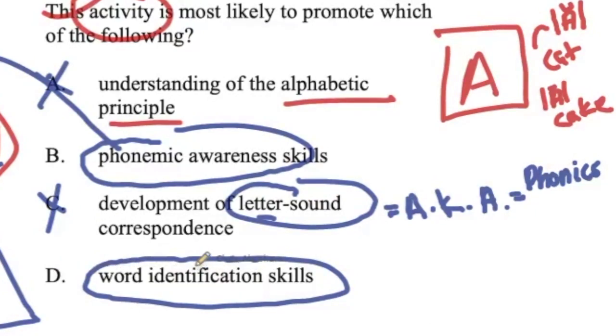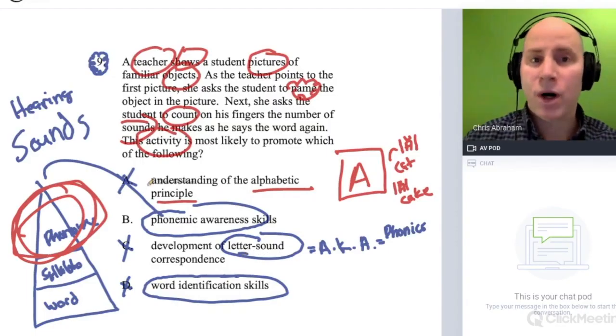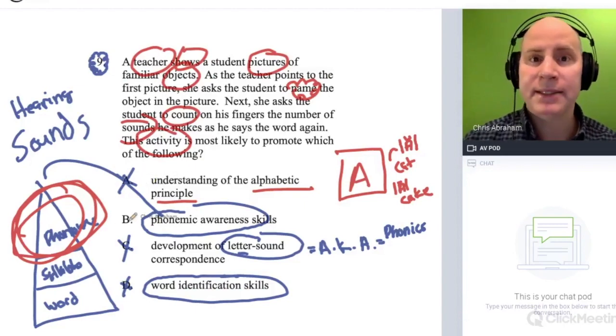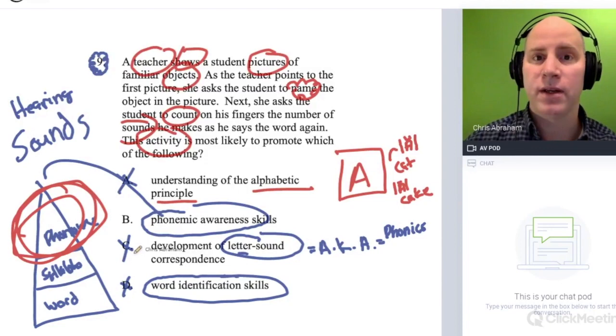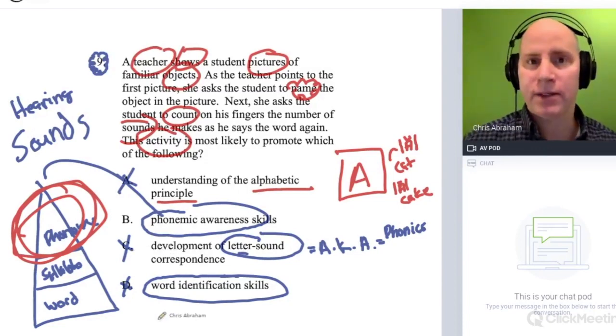What about D? D has to do with word identification skills, like using context clues and having awareness of sight words and using structural word analysis to break down a multi-syllable word - all these things that have to do with identifying words that are made up of letters, which are all print. You can cross that out. One way to eliminate A, C, and D is just to know that this activity has to do with sound, pure sound and not print.